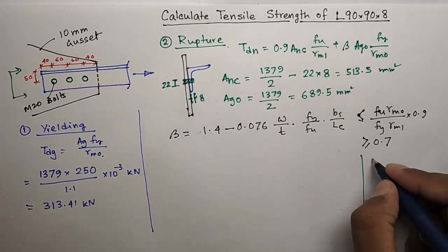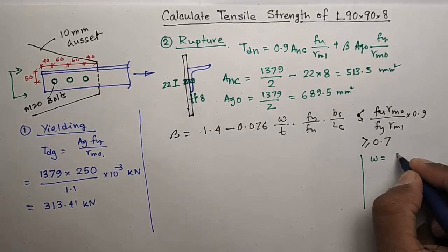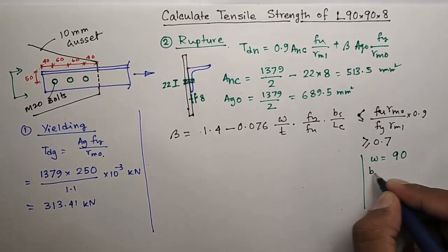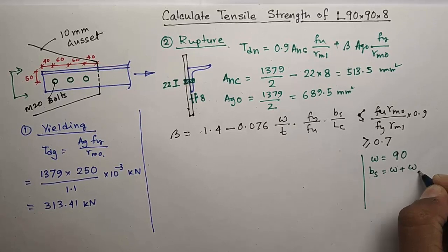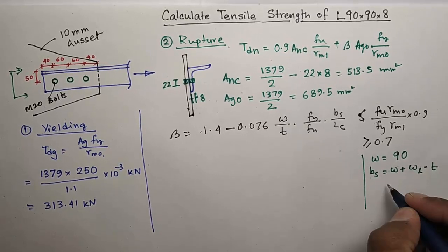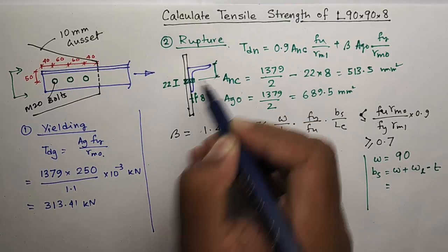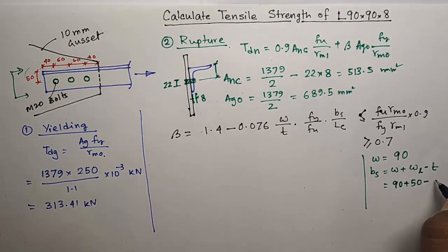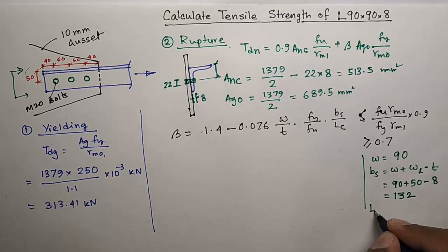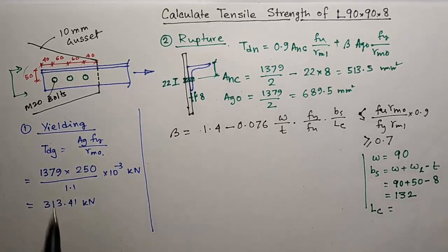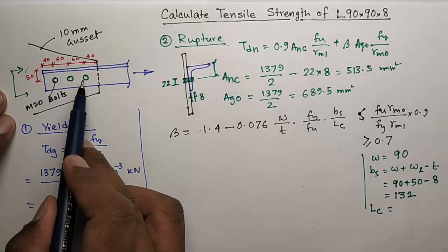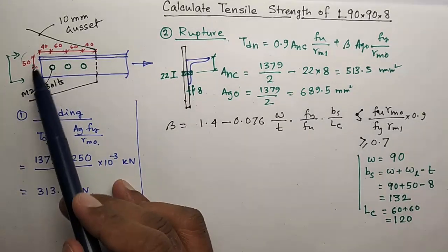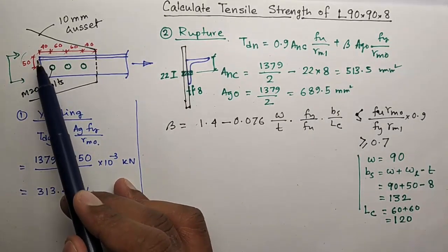The formula of beta is... What is W? W is the leg length which is 90. T is thickness 8. BS is W plus WL minus T. WL is this distance, which is 50. So 90 plus 50 minus 8, you get 132. LC is the distance between outermost bolts, the first bolt and last bolt, which is 60 plus 60, so 120.